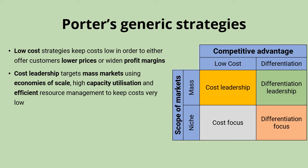The most obvious way of doing a low cost approach is cost leadership — low cost targeting the mass market. We use economies of scale and high capacity utilisation in order to be really efficient and keep costs low. Economies of scale help us to drive down our cost per unit because of our large scale of production, and high capacity utilisation helps us to spread fixed costs over more units, keeping overall costs down.